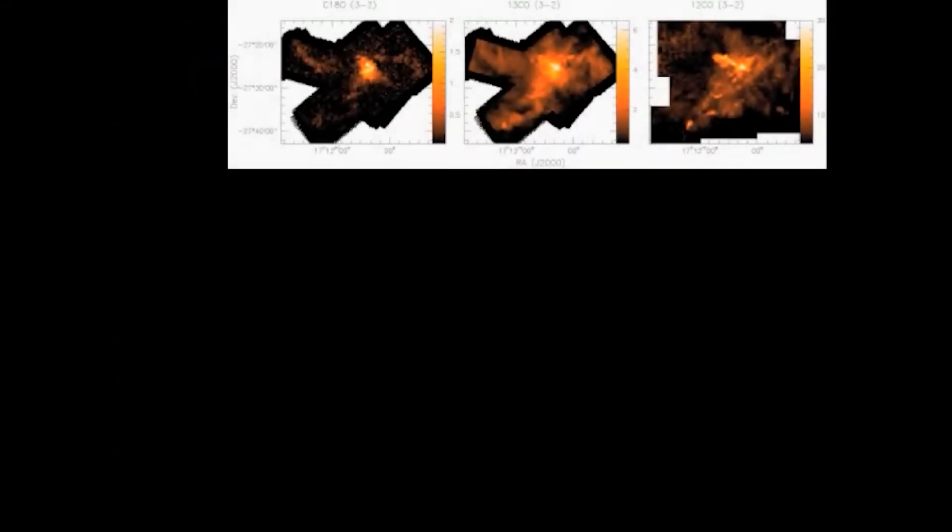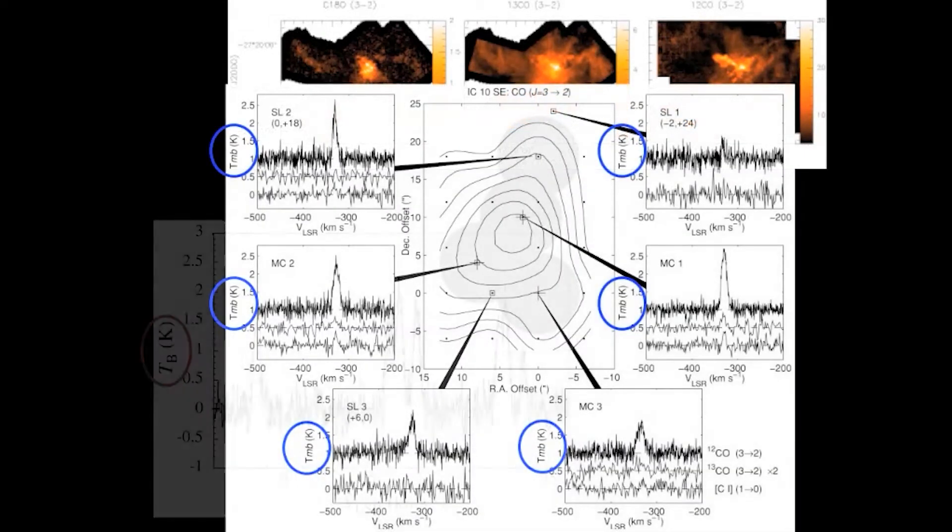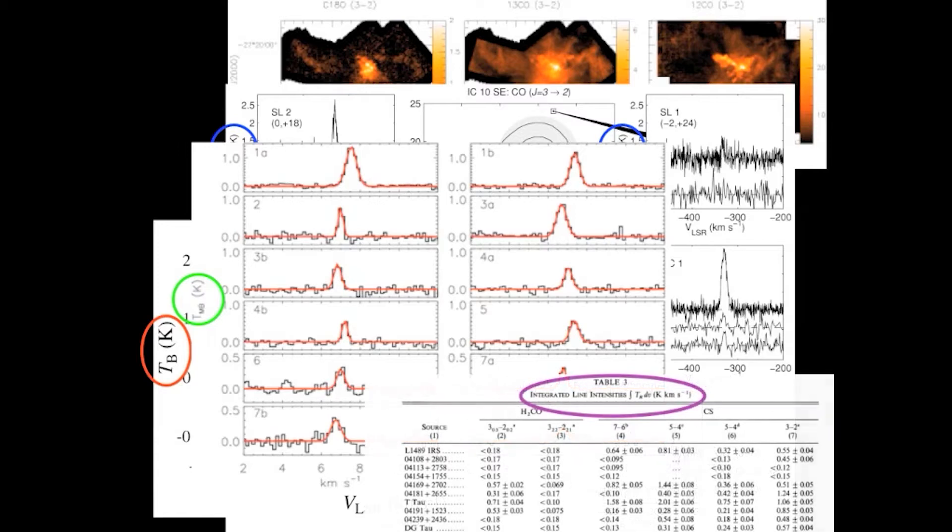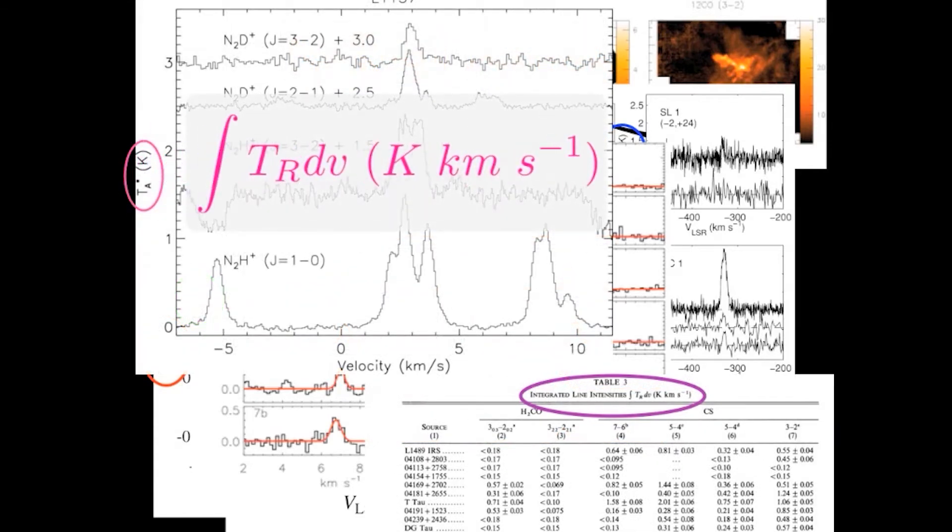Observations from single-dish telescopes, particularly spectral data, are often quoted in units of kelvins, or kelvins kilometer per second, which is the integrated intensity over a spectral line.